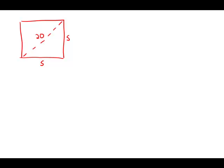A square mirror has a 20 inch diagonal. What is the approximate perimeter of the mirror in inches?